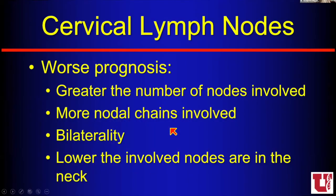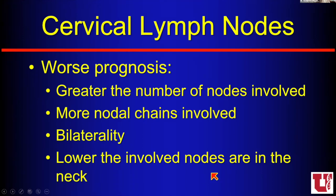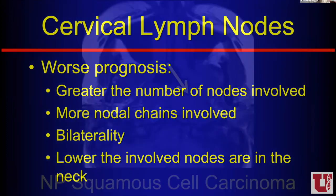With lymph nodes, you have a worse prognosis with a greater number of nodes involved, more nodal chains, bilateral involvement, and the lower in the neck — closer to the heart — the worse the prognosis. So we know that lymph nodes are very important in head and neck cancer.